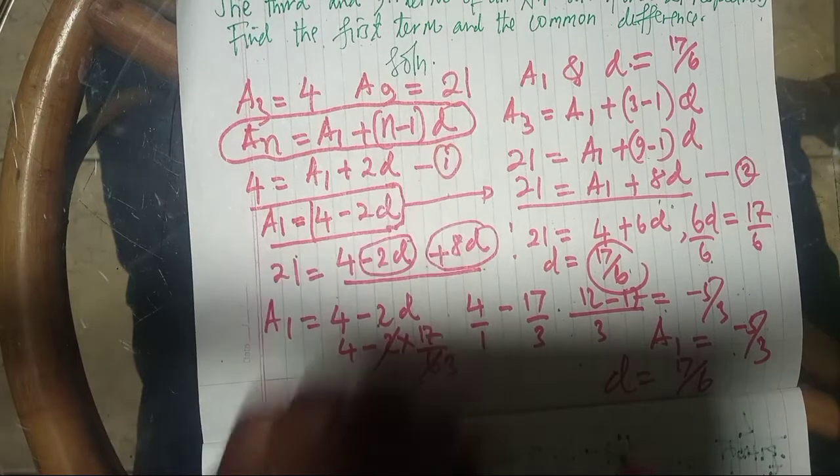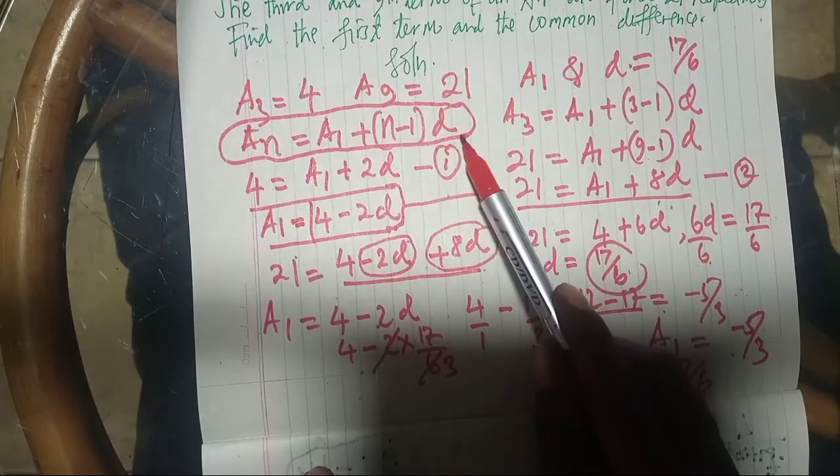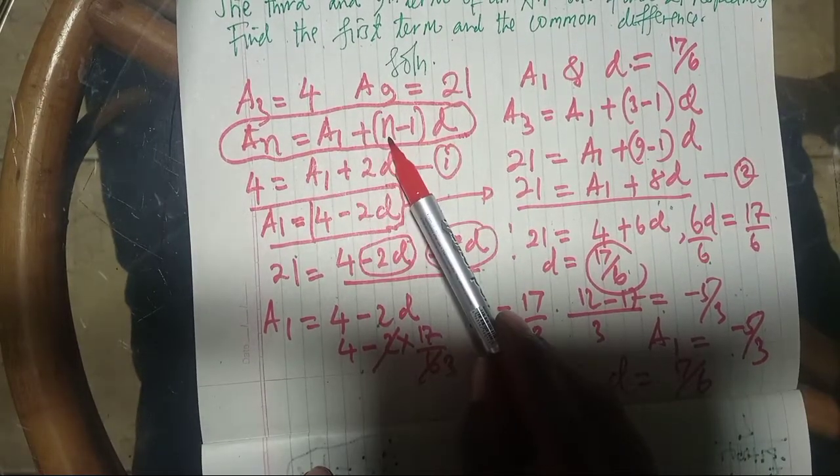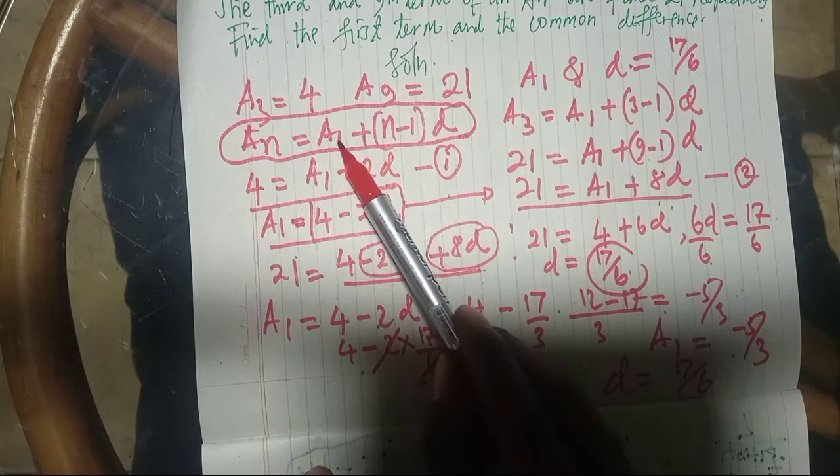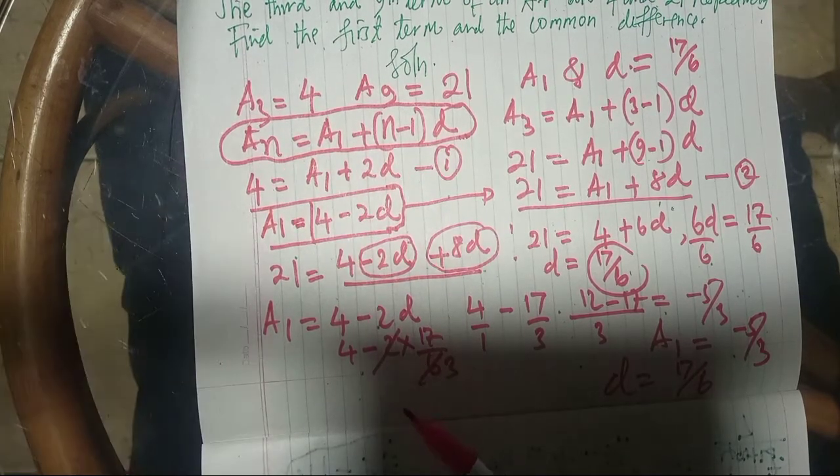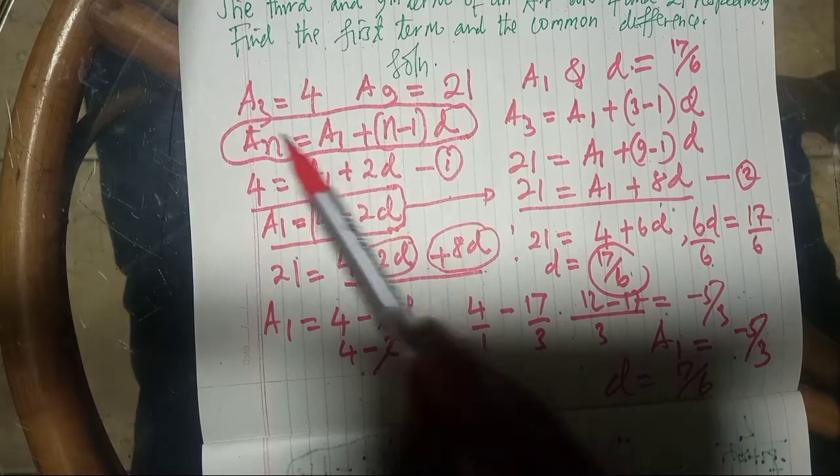This D is the common difference. Here D is the common difference, and here N is the number of terms, and A1 is the first term, and AN is the general term, which you use.